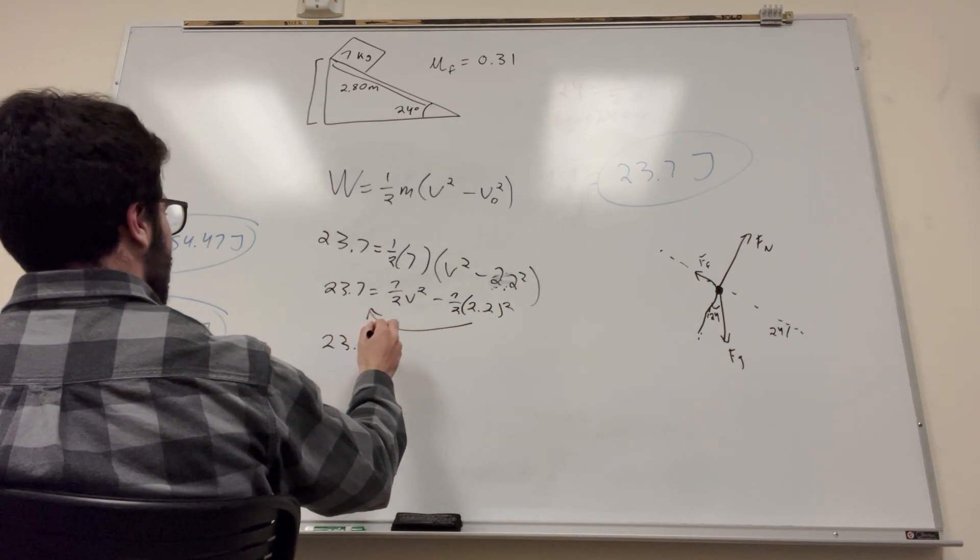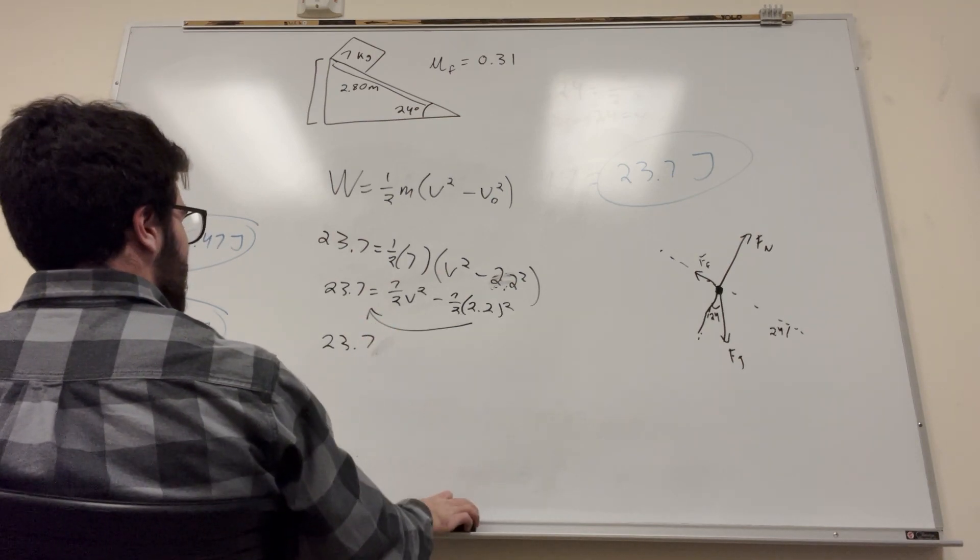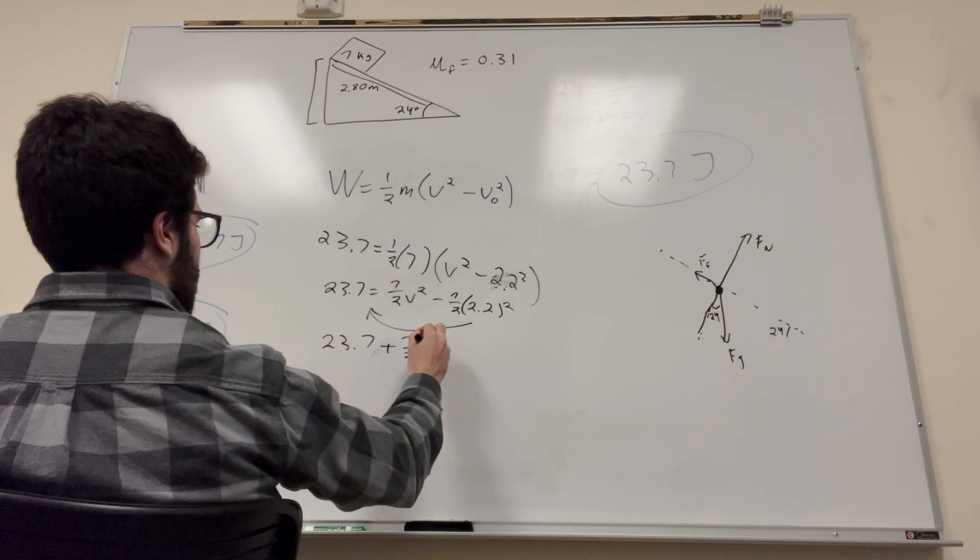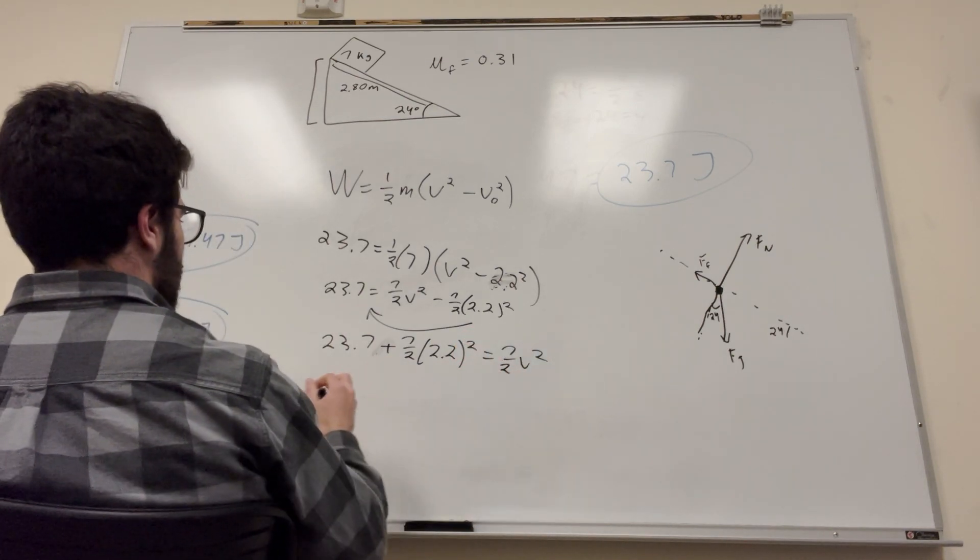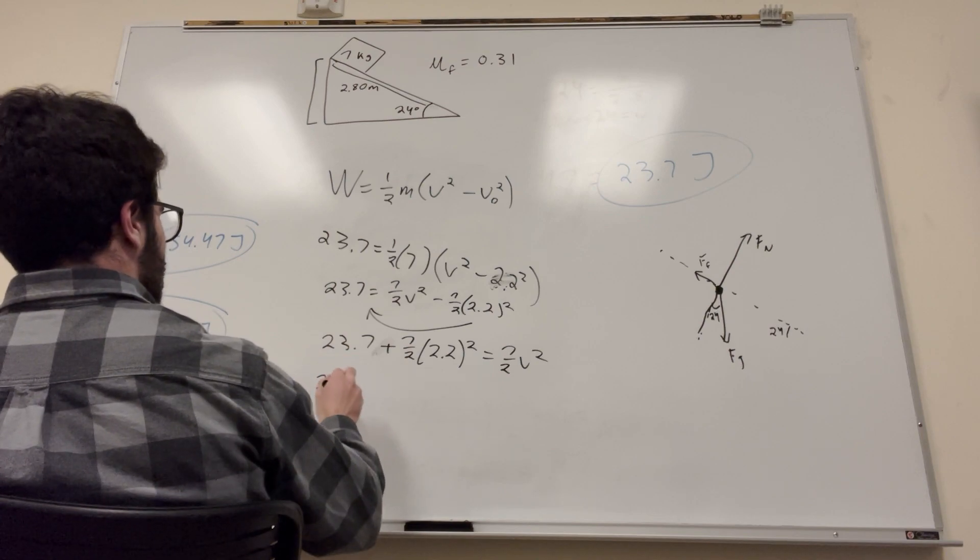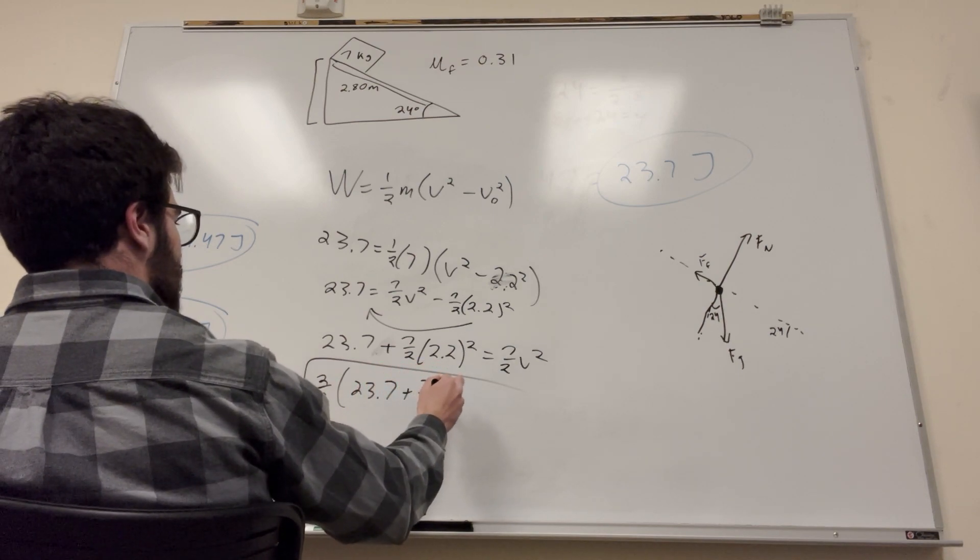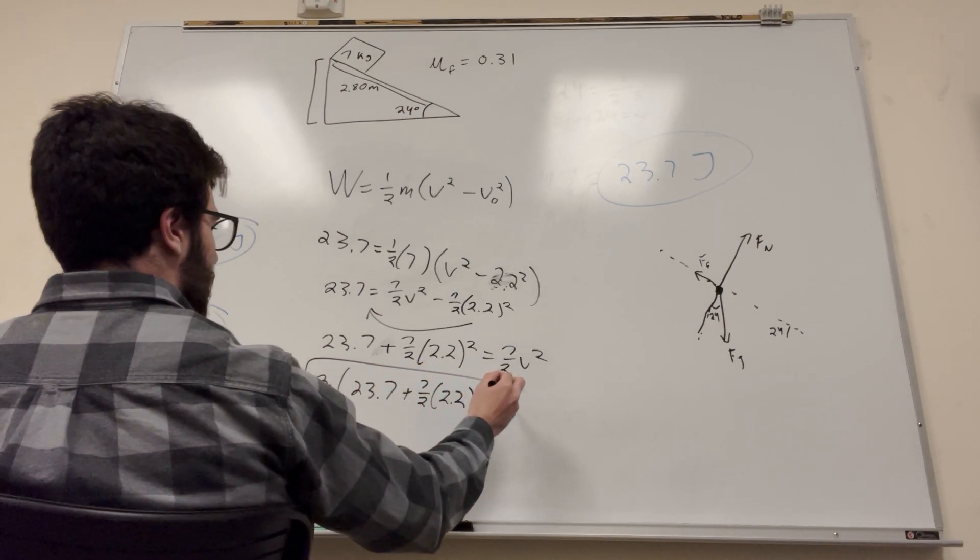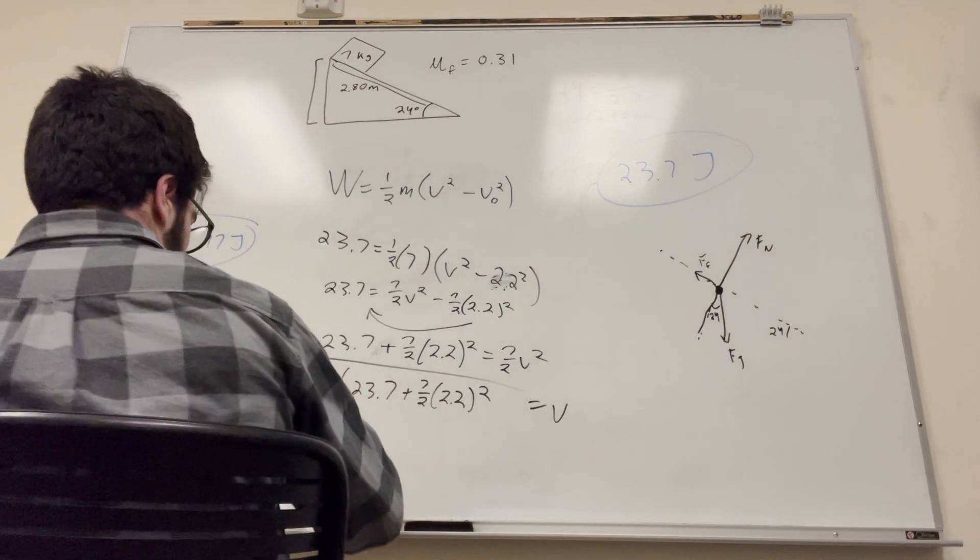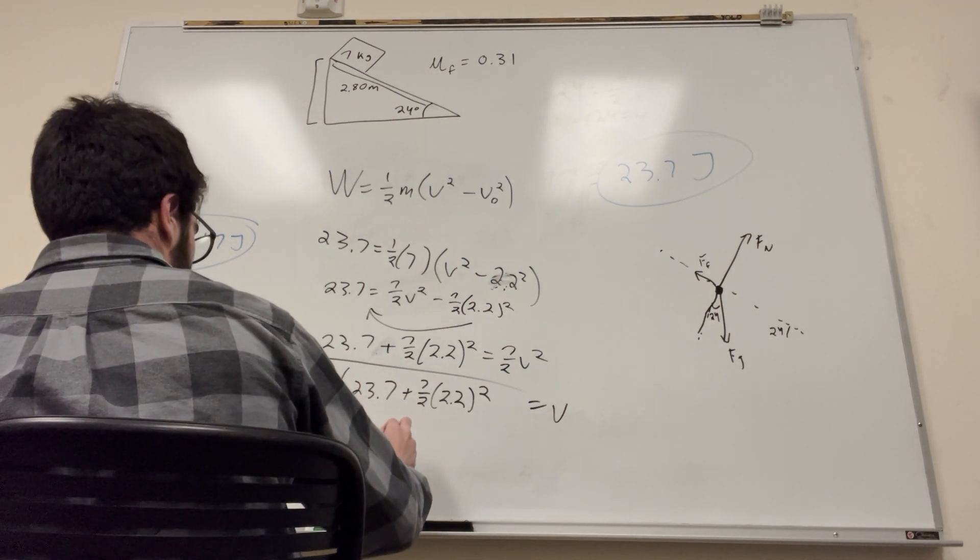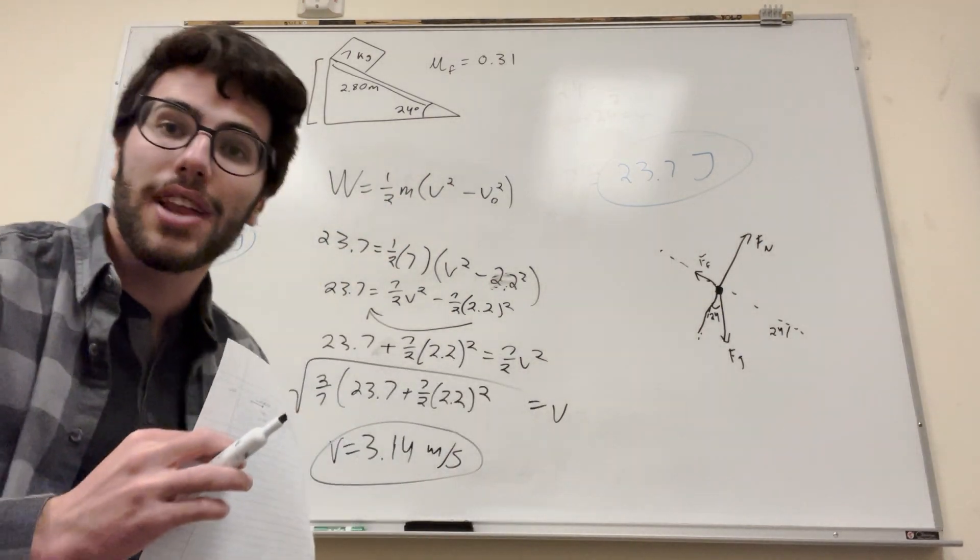So it's going to be like 23.7... You can do the math on this. Then you multiply both sides by two-sevenths and then you take the square root of it all and it'd be square root of two-sevenths times 23.7 plus seven-halves times 2.2 squared is equal to velocity. All right, plug that into your calculator. You get velocity is equal to 3.14 meters per second which makes sense because we started at like 2.2 and we would speed up as we go down the block so that makes sense.